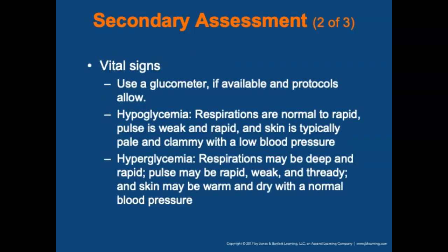Vital signs should include blood sugar levels using a glucometer, if available and protocols allow. For hypoglycemia: respirations are normal or rapid, pulse is weak or rapid, skin is pale and clammy, and blood pressure may be low. For hyperglycemia: respirations are deep and rapid, pulse may be rapid, weak, and thready, skin is warm and dry, with normal blood pressure. Remember: hypo equals pale, cold, diaphoretic; hyper equals warm and dry.